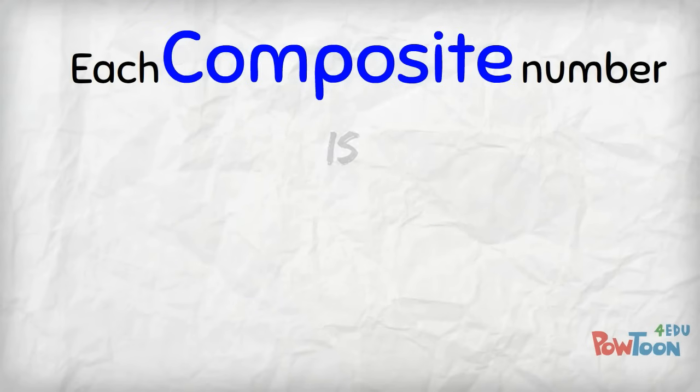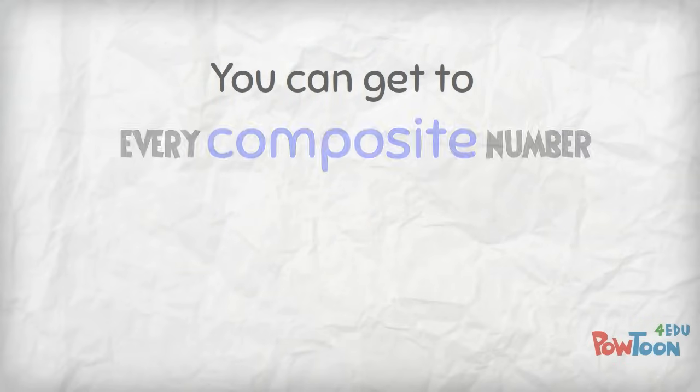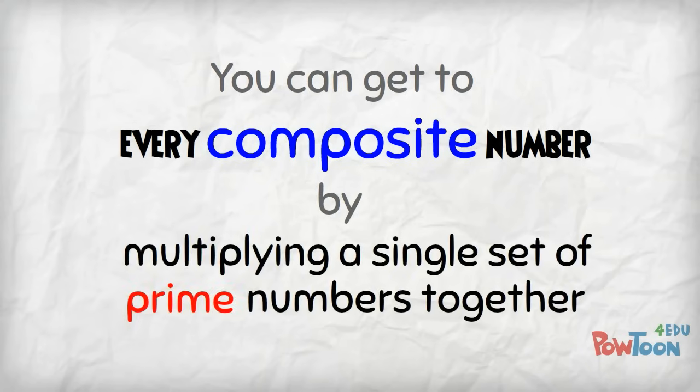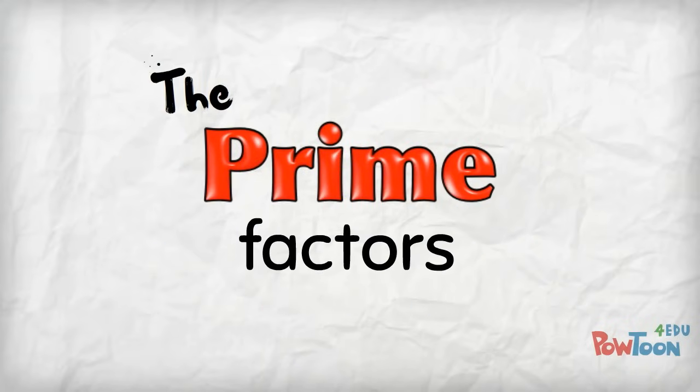Each composite number is made up of a single set of prime factors. In other words, you can get to every composite number by multiplying a single set of prime numbers together. We call these the prime factors of a number.